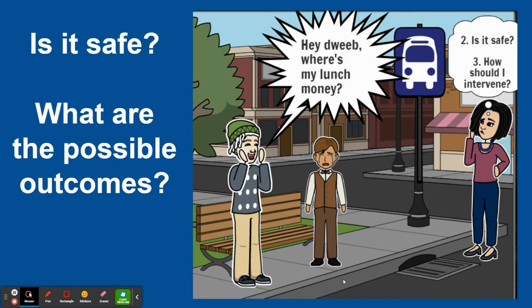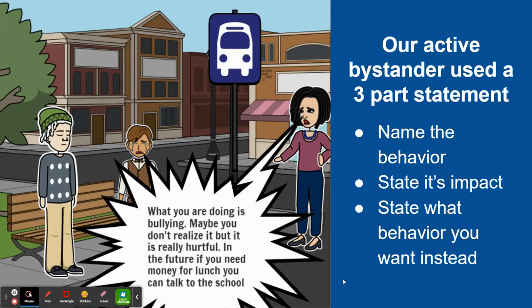The other question that our active bystander needs to consider is: is it safe? What are the possible outcomes? In this situation, she is an adult, or adult-seeming, so she has a lot more power in the situation. Clearly, it is safe for her to intervene. The next choice is how should she intervene? And she chooses to intervene directly.